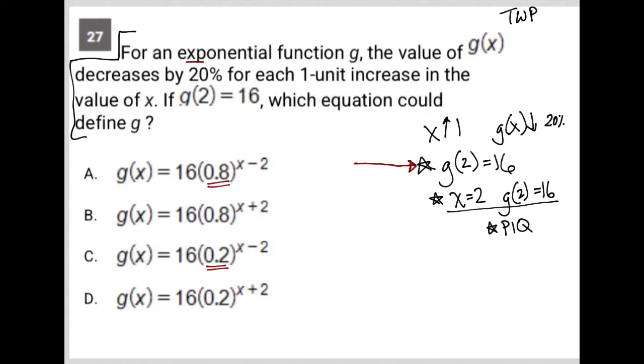Well, I think this is coming from this 20% decrease that was mentioned in the question, right? Because we hadn't otherwise talked about that in our plugging in. So if I'm decreasing by 20%, right? So if g(2) equals 16,